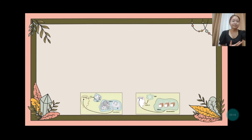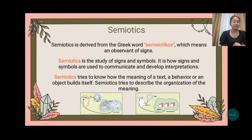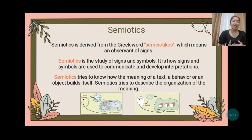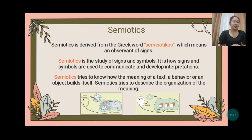In a broader sense, semiotics is derived from the Greek word semiotikos, which means an observant of signs. Semiotics is the study of signs and symbols — it is how signs and symbols are used to communicate and develop interpretations. Semiotics tries to know how the meaning of a text, a behavior, or an object builds itself, and tries to describe the organization of meaning. In a broader definition, semiotics is an investigation into how meaning is created and how meaning is communicated. Its origin lies in the academic study of how signs, symbols, visuals, and linguistics create meaning.